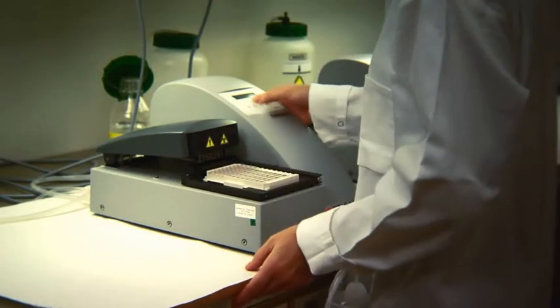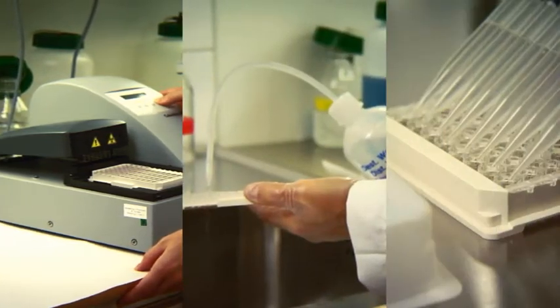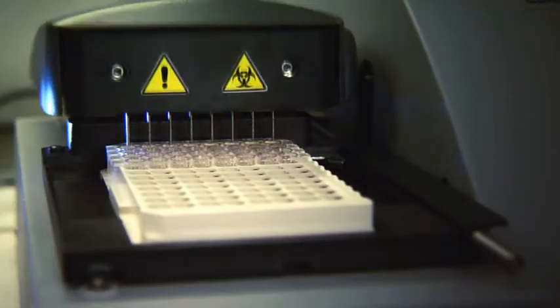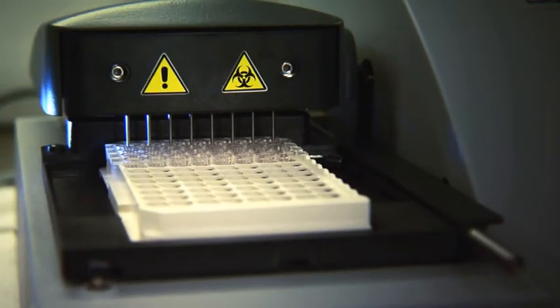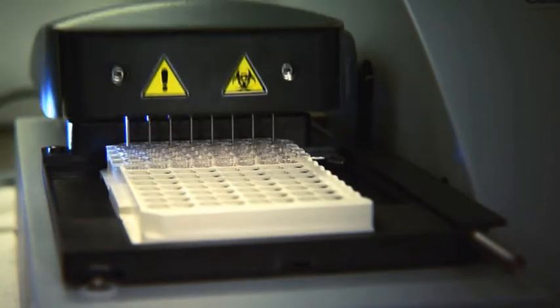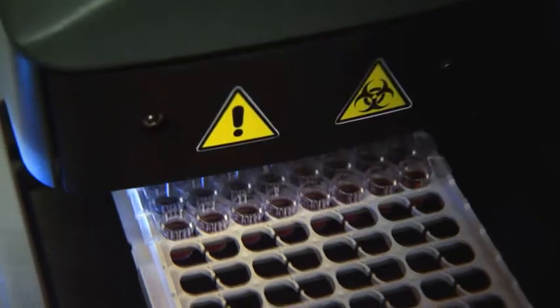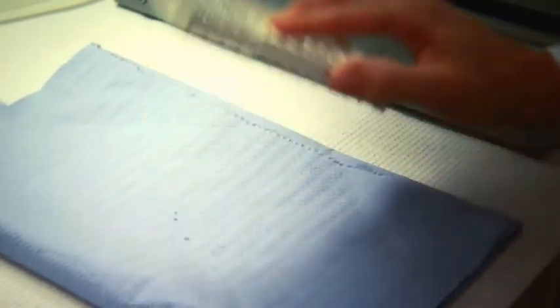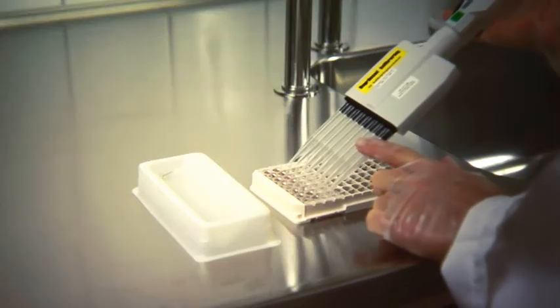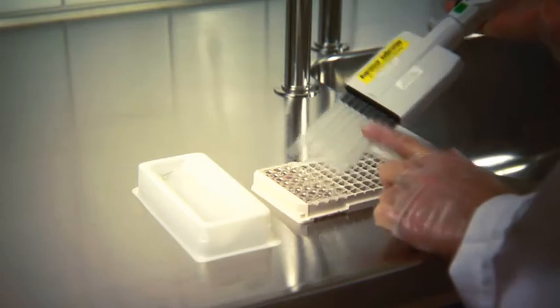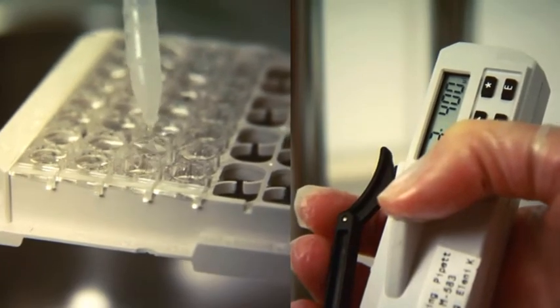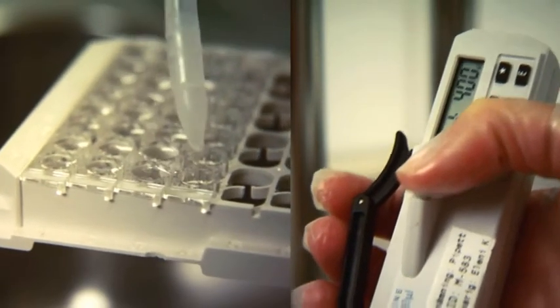We recommend using an automated plate washer when washing, however, manual washing is also approved. When using an automated wash, be sure that the program setting does not include a soak function. Wash six times and after final wash, invert and tap the plate firmly against absorbent paper. The procedure for manual washing can be done with a multi-channel pipette or a squirt bottle. To learn more on manual washing, see the manual wash technical notes.